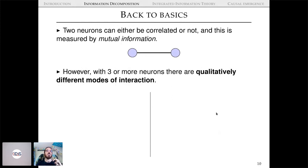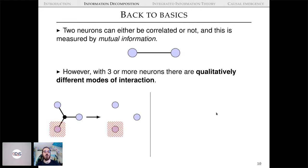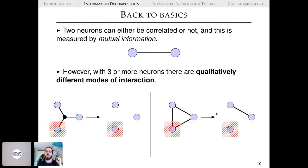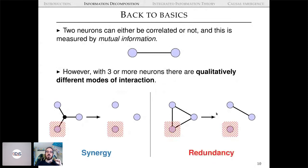When you have three or more neurons, qualitatively different modes of interaction start happening. You can have three neurons where marginalizing out one destroys the connection between the other two — that's synergy — or where the connection between the other two is preserved — that's redundancy. These three-way connections differ in quality.